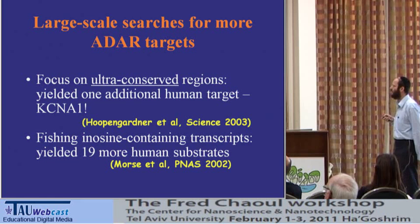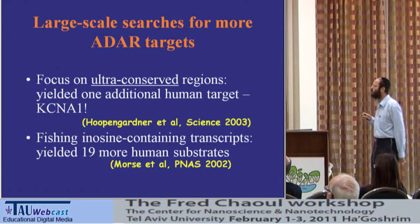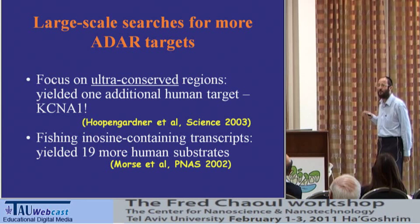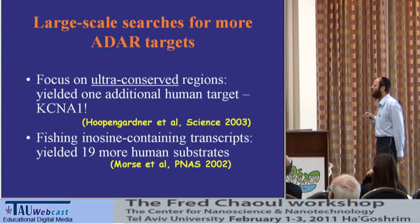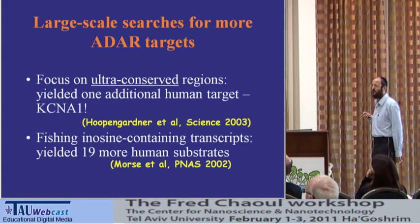This was the motivation to look for more editing sites. One group in 2003 suggested looking for ultra-conserved regions, as regions in DNA that are edited tend to be more conserved between species than regular protein-encoding regions. They did a very big search, and this yielded one additional target — increasing the number of known non-coding targets from three to four. Another biochemical method that tried to directly fish out transcripts enriched with inosine found 19 more targets, but the inosine was in the non-coding parts of the transcripts rather than in protein-coding sequences.